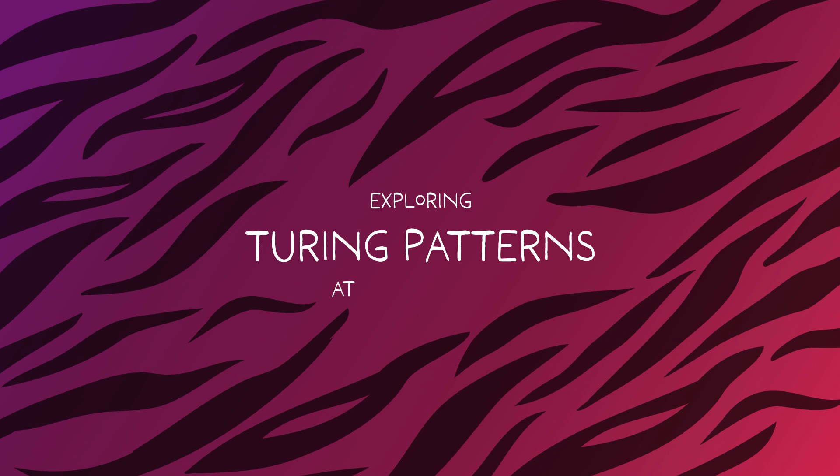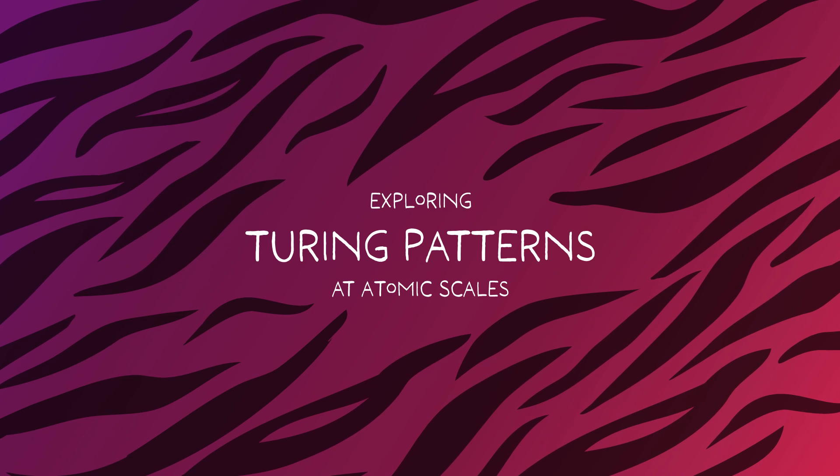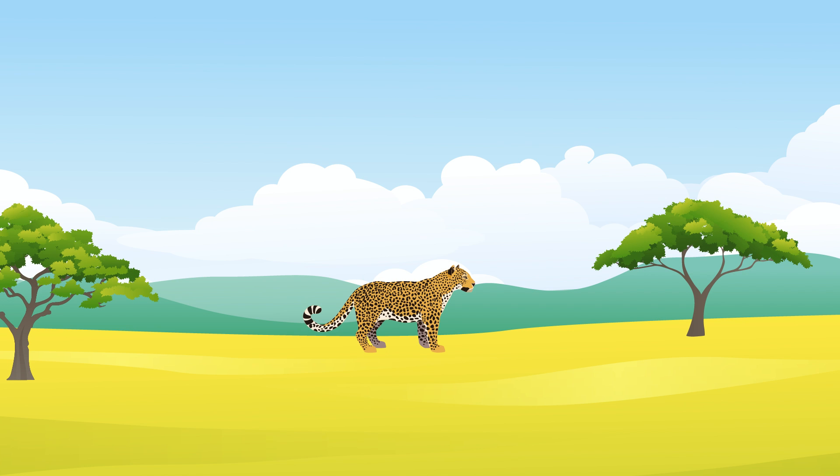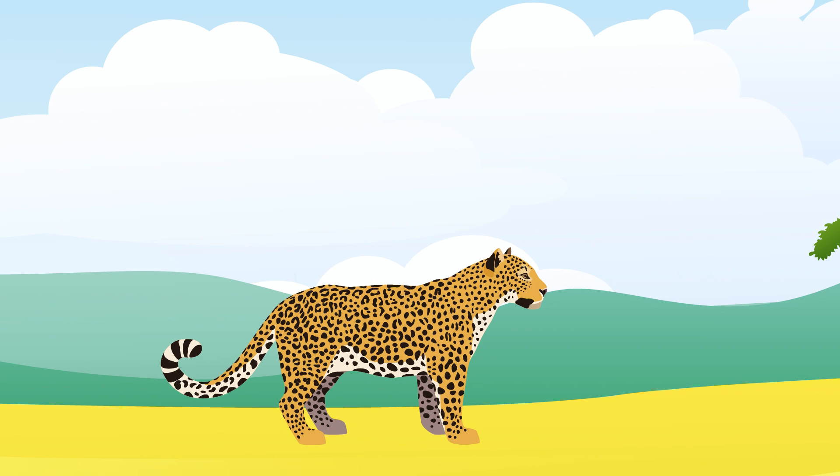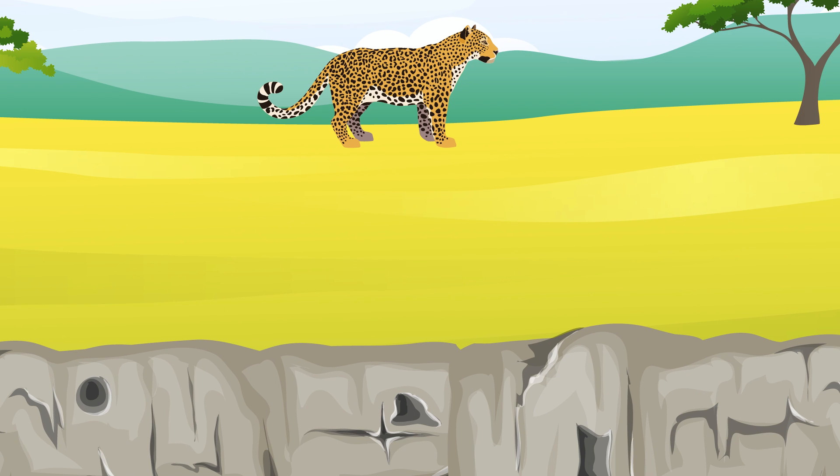Exploring Turing Patterns at Atomic Scales. Patterns can be found across the entire natural world, from the spots on a leopard's coat to stripes in mineral deposits deep underground.